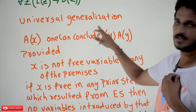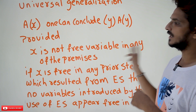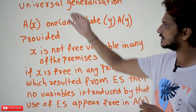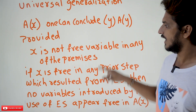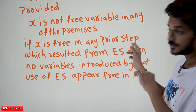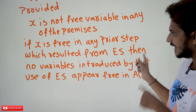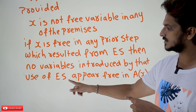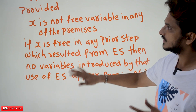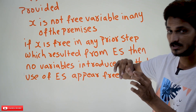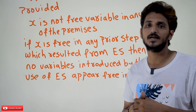Coming to the definition of universal generalization: from A(x), one can conclude for all y, A(y), provided — first, x is not a free variable in any of the premises that were provided; and second, if x is free in any of the prior steps from the derivation which resulted from existential specification, then no variables introduced by that use of existential specification appear free in A(x). Simply put, if it is derived from existential specification, we are not going to apply that for universal generalization.